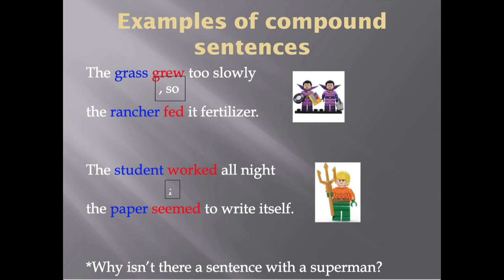Remember, the idea of a semicolon is that if you want to show as a writer that the two sentences you are separating are very closely connected, you would choose a semicolon instead of a period. And then a question I would ask y'all is: why isn't there a sentence with a Superman? If we're talking about compound sentences, how come there is no Superman example here? This is worth a bonus point if you can answer it in your notes.